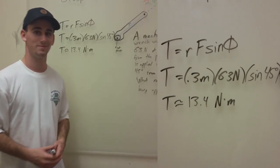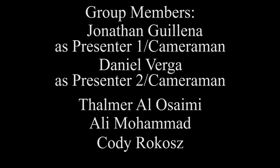And then from that, I didn't calculate that yet, so we are going to have to change that a little bit. So we calculate that 0.3 times 63 times the sine of 45, and we get that this mechanic is turning that wrench with a torque of 13.4 newton meters.